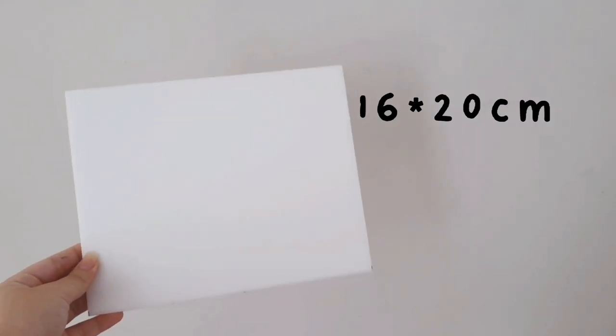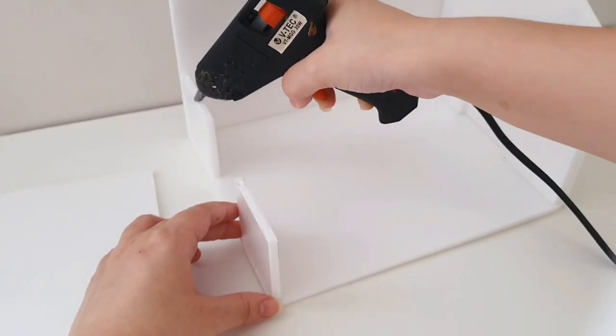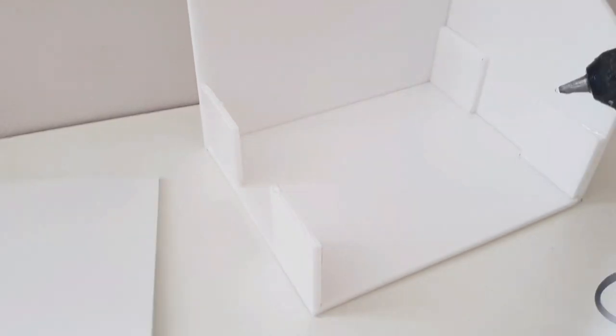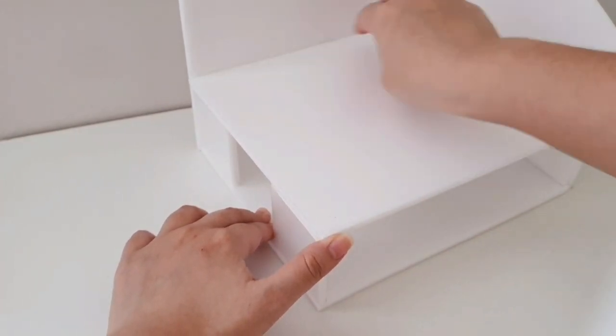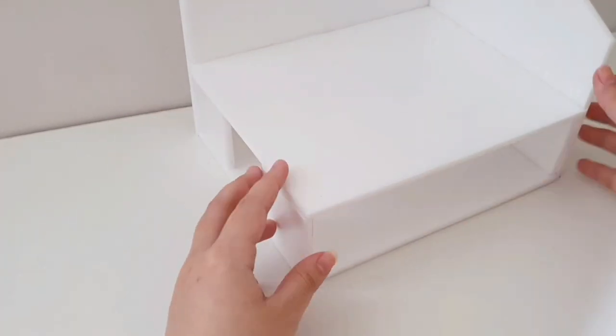And after you're done, you want to take the second 16x20 cm piece and glue it above those raises. Make sure to glue it strongly, and this is what it should look like afterwards.